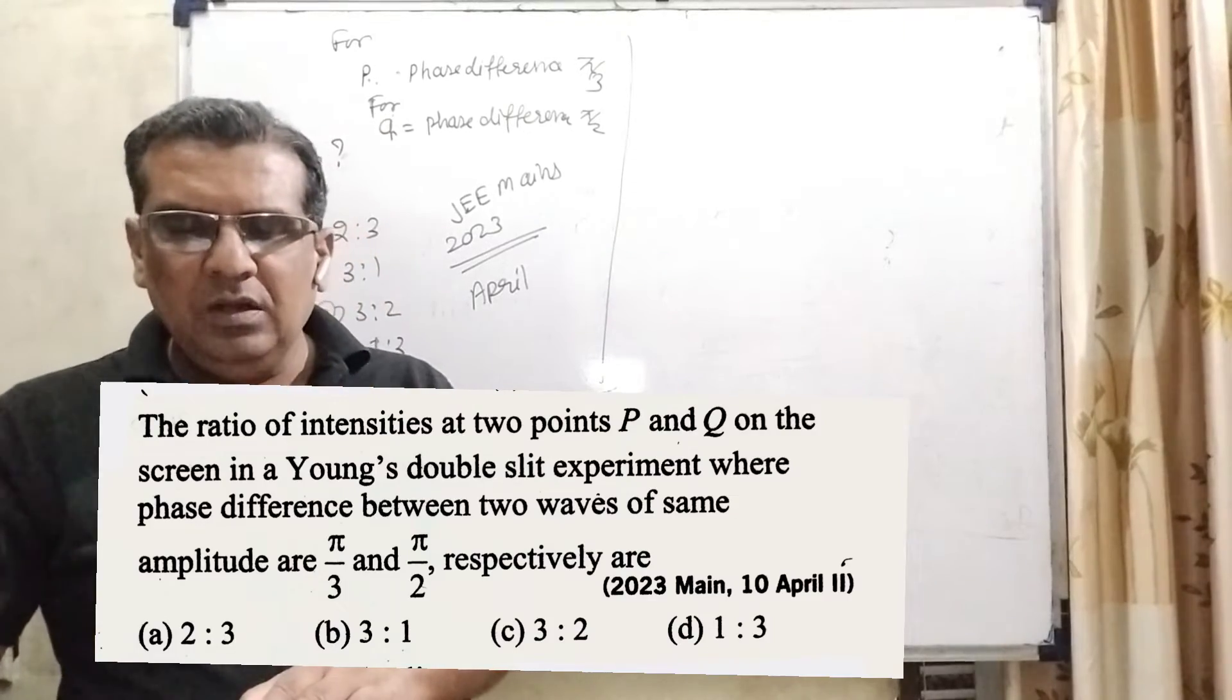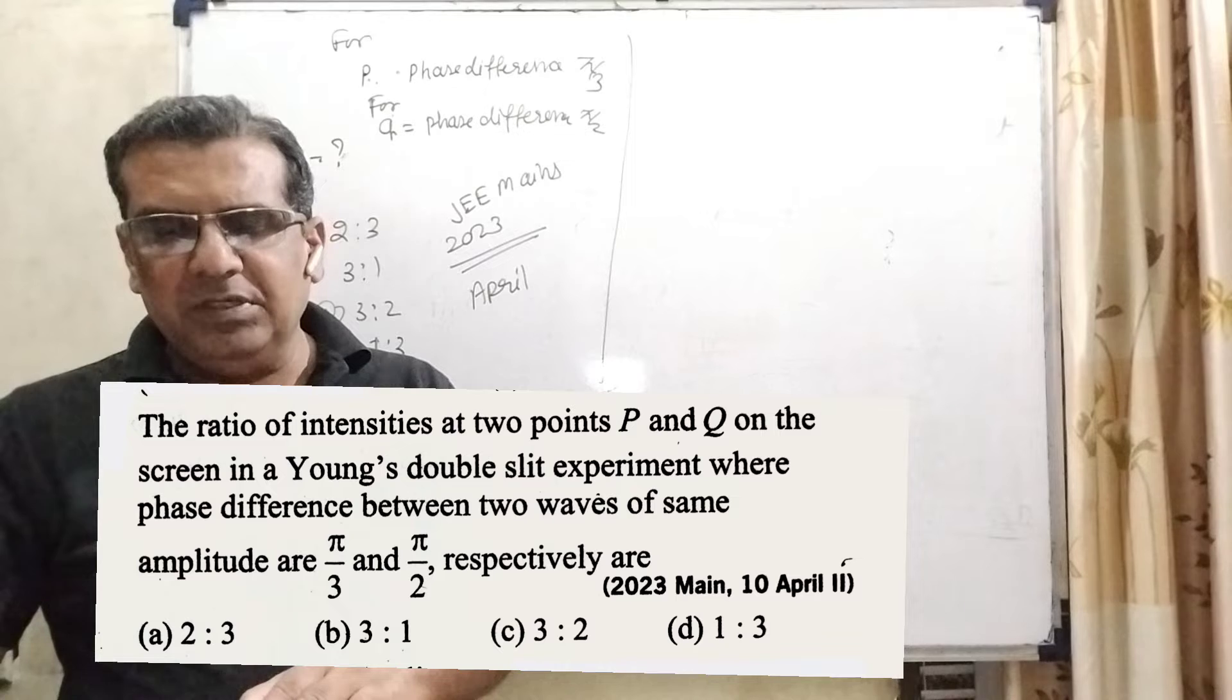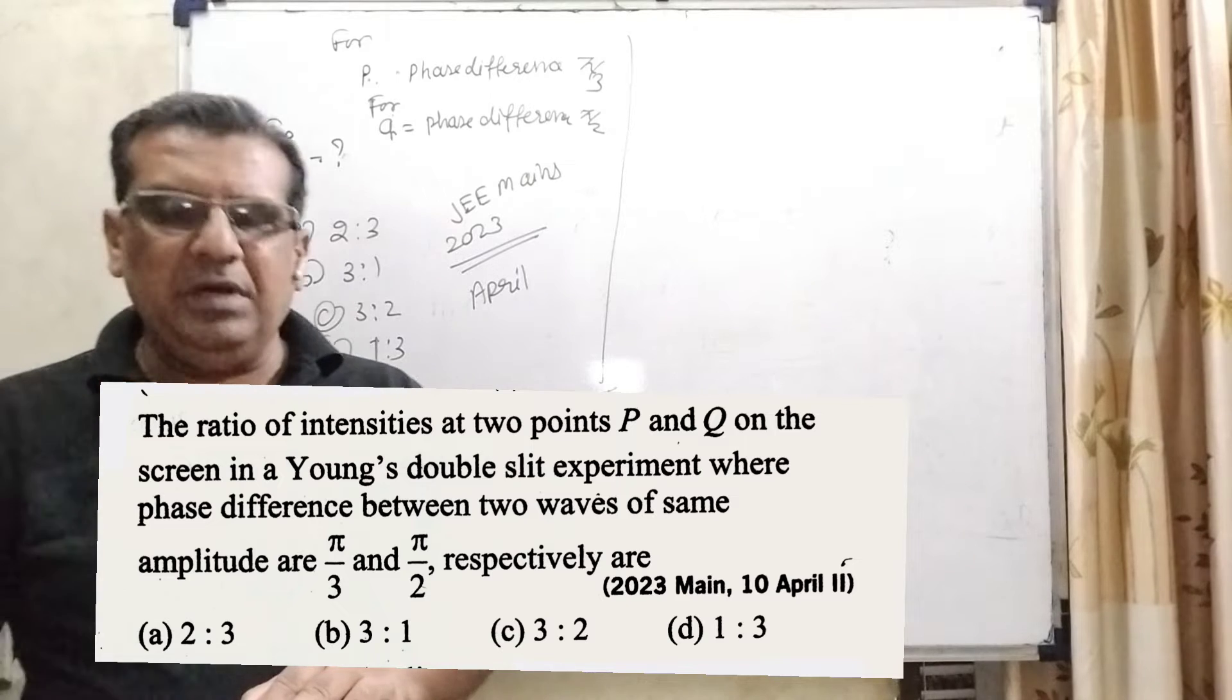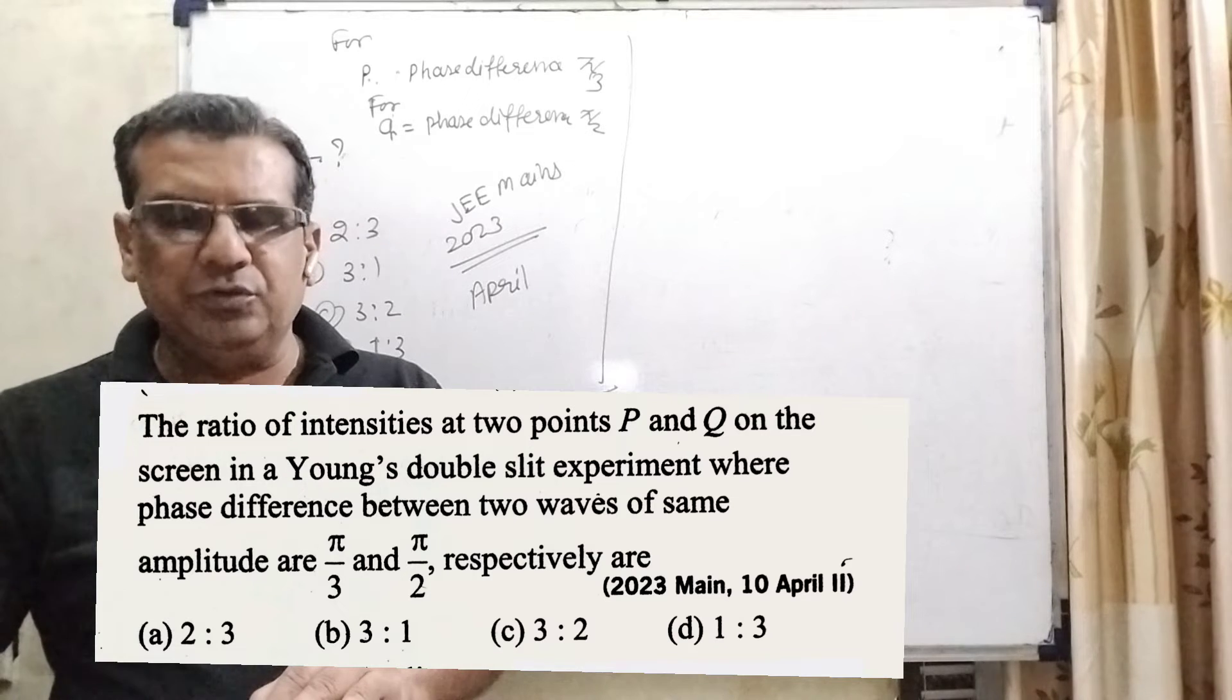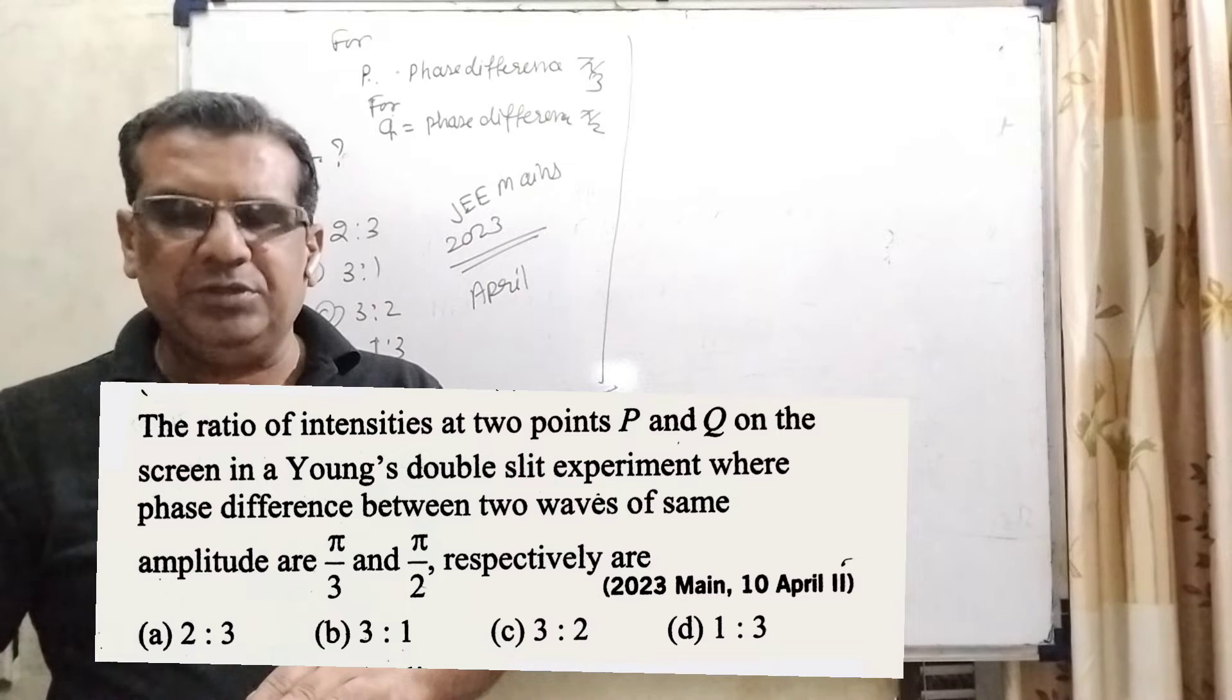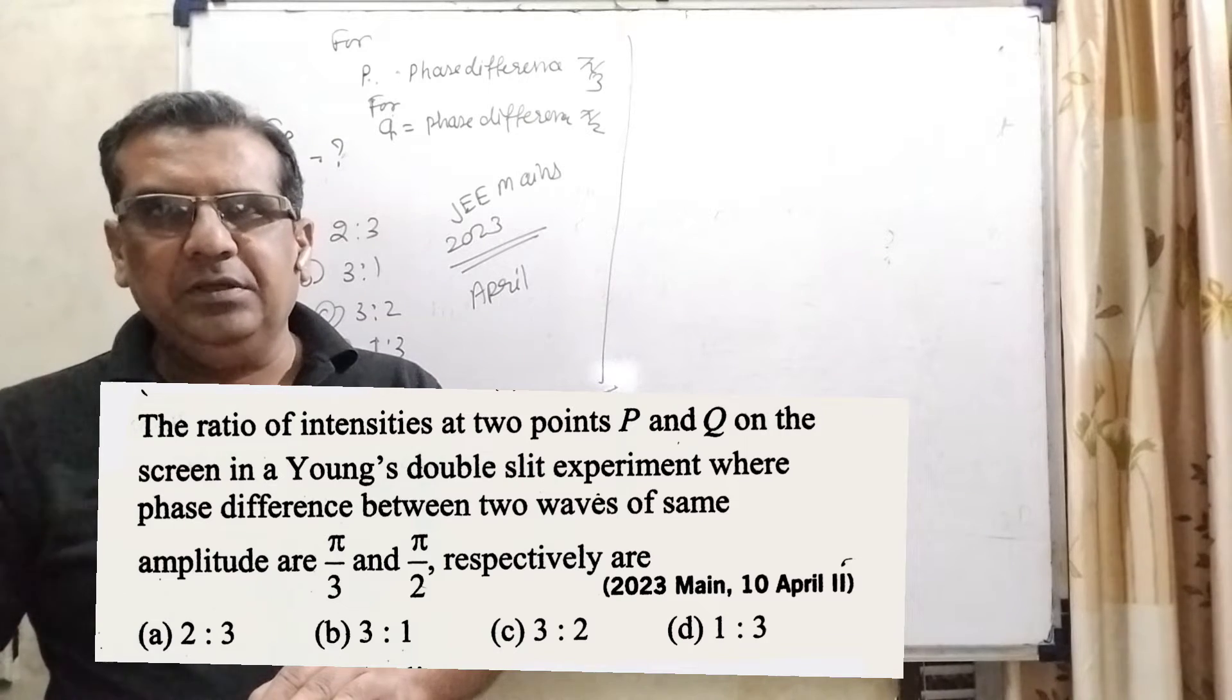Now here is the question. The ratio of intensities at two points P and Q on the screen in a Young's double slit experiment, where phase difference between two waves of same amplitude are π by 3 and π by 2 respectively are. Here we have given four options. Option A, 2 is to 3. Option B, 3 is to 1. Option C, 3 is to 2. And option D, 1 is to 3. And this question is asked in JEE Mains 2023, April.